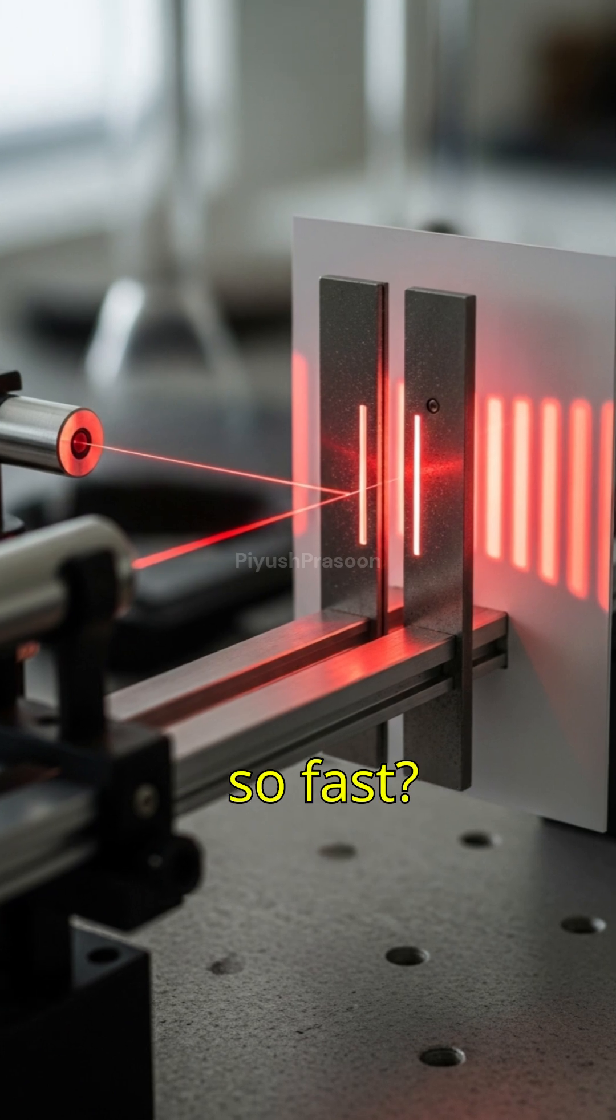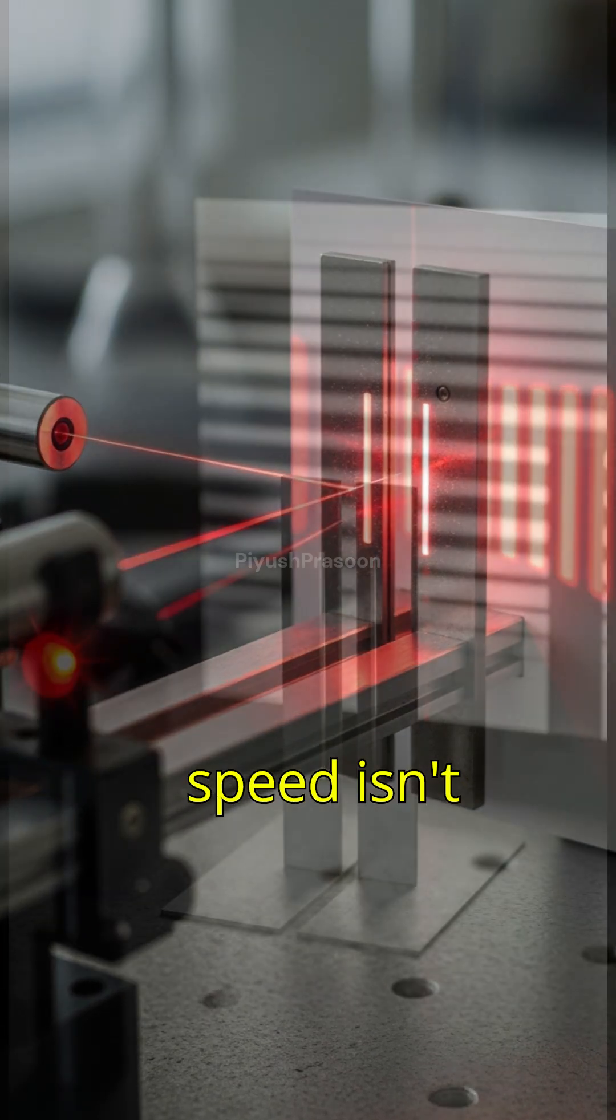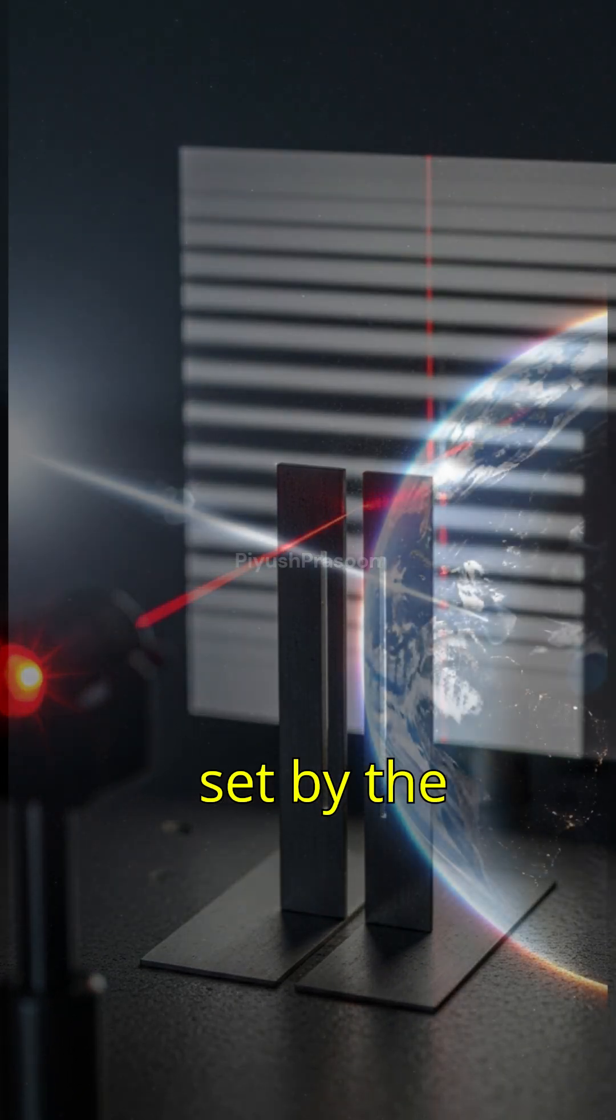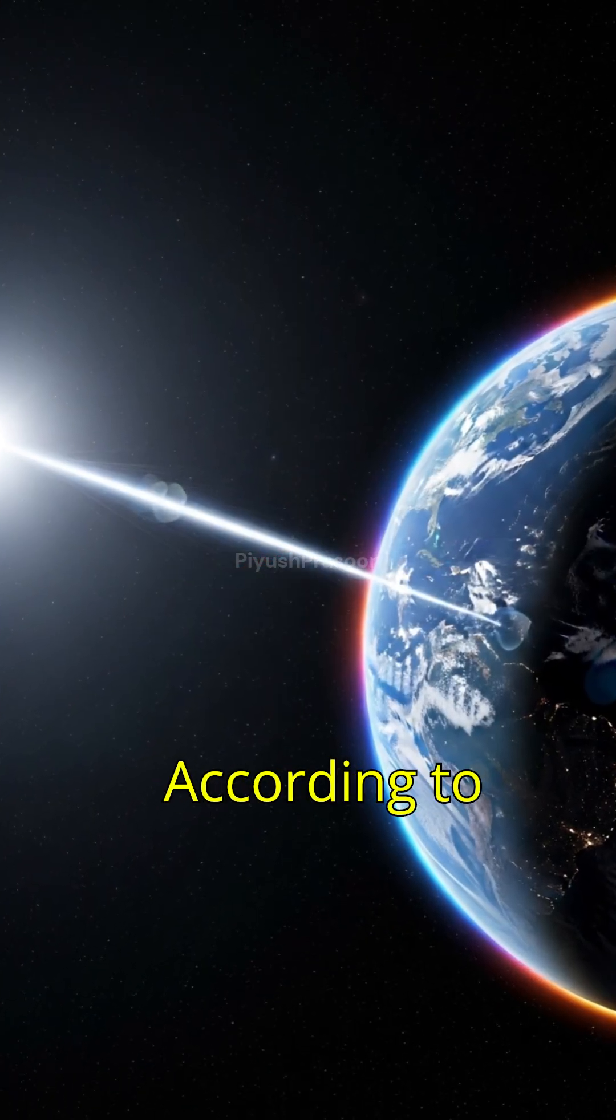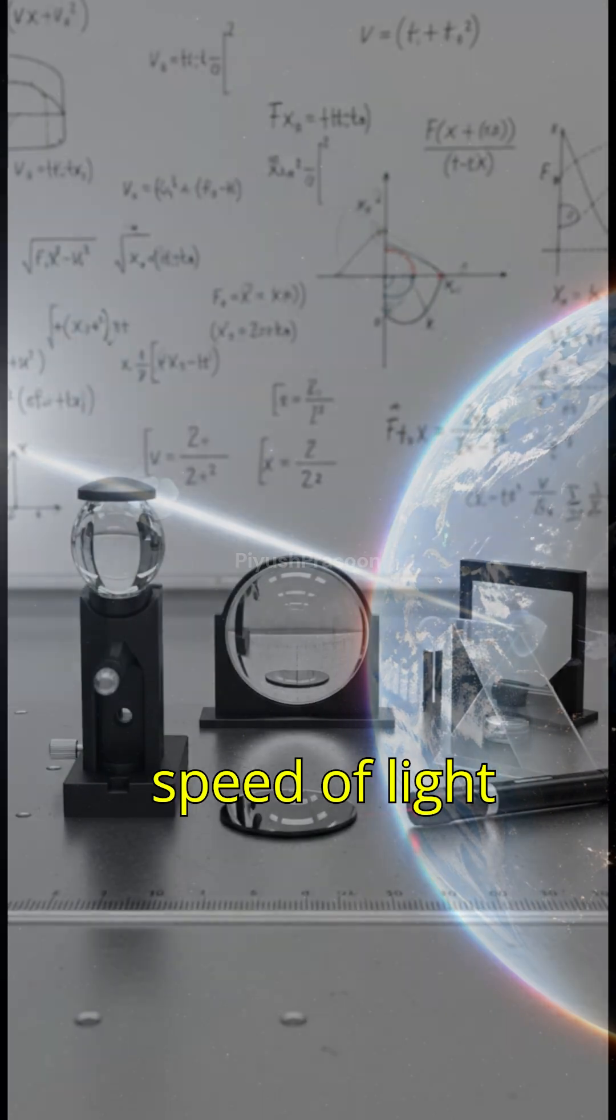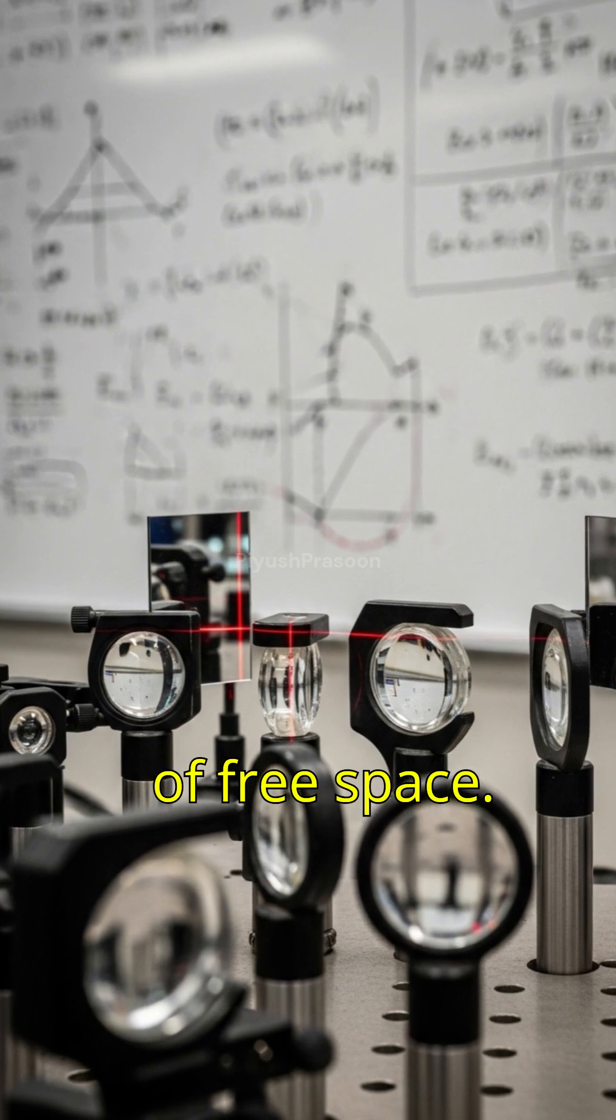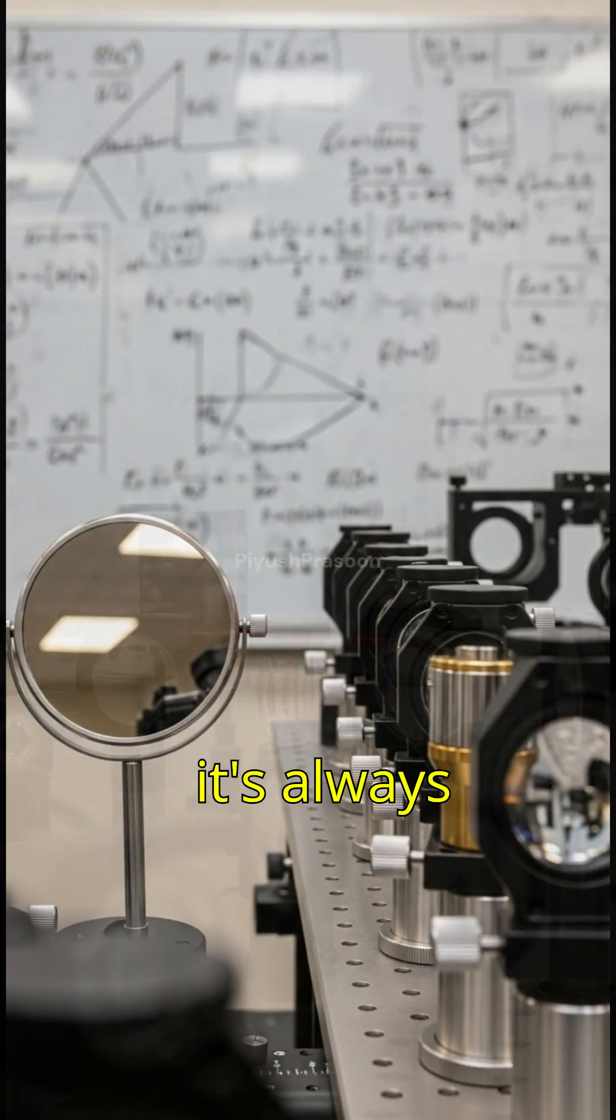So why is light so fast? Because its speed isn't set by any object or medium, it's set by the very fabric of space itself. According to Maxwell's equations, the speed of light depends only on two constants, the permittivity and permeability of free space.